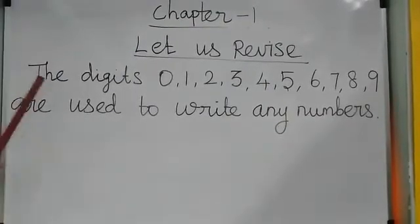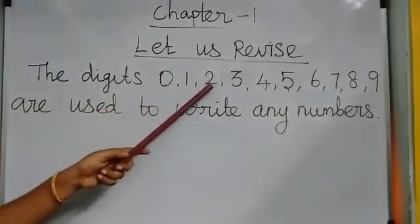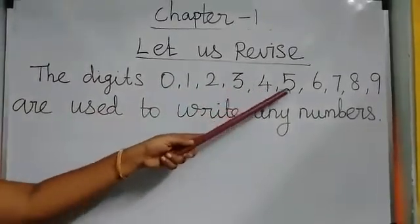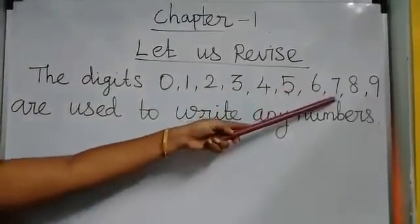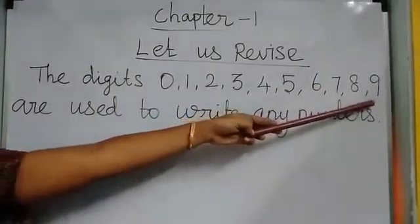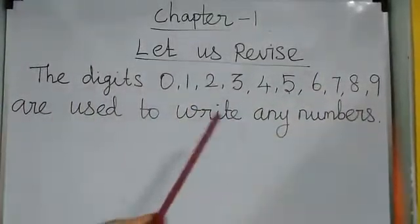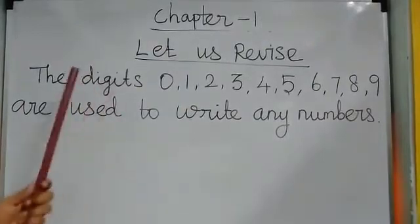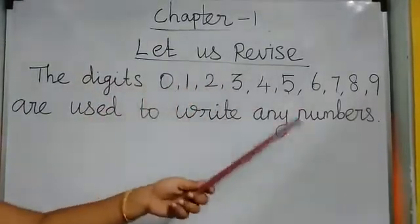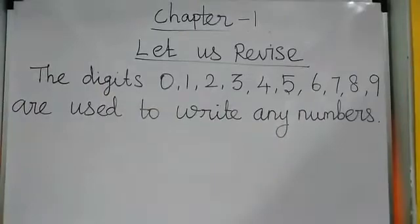The digits 0, 1, 2, 3, 4, 5, 6, 7, 8, 9 are used to write any numbers. These numbers 0 to 9 are used to write any numbers.